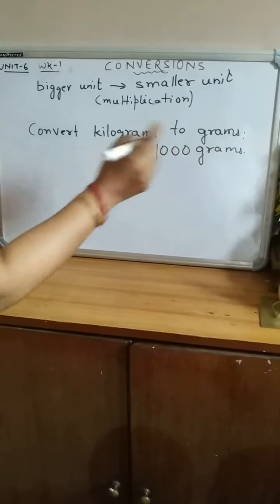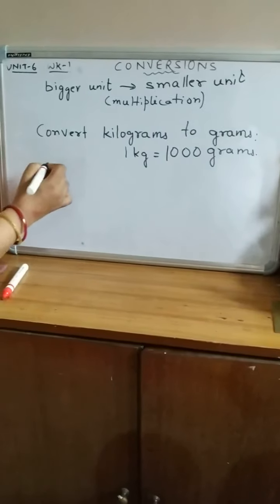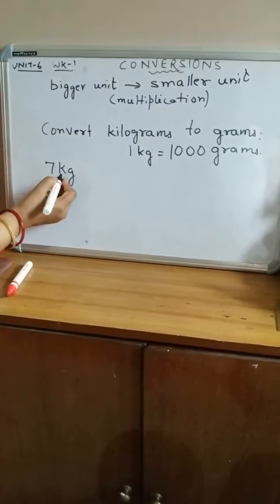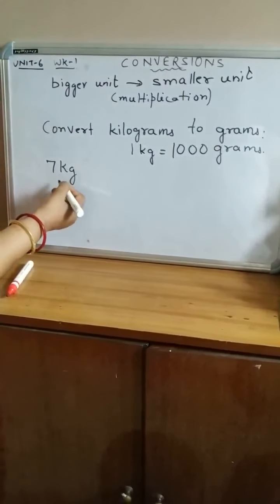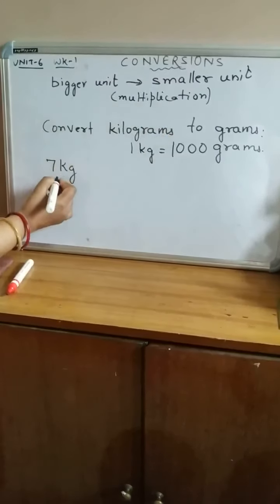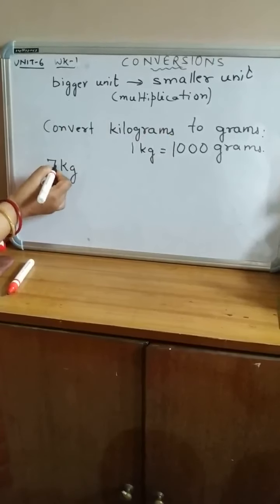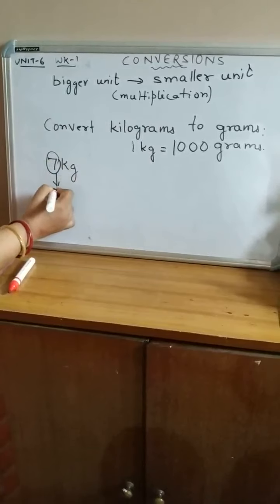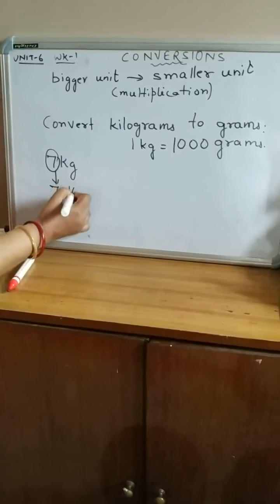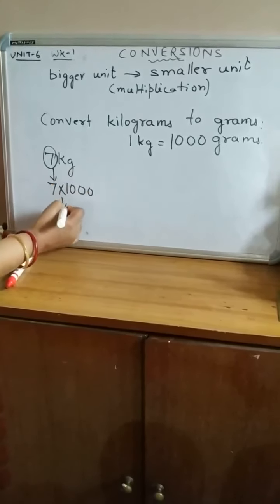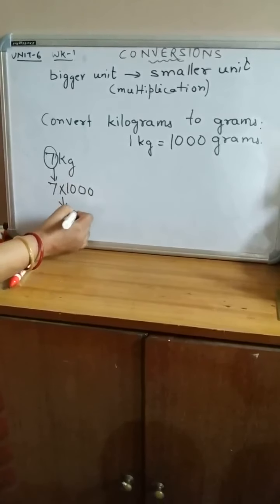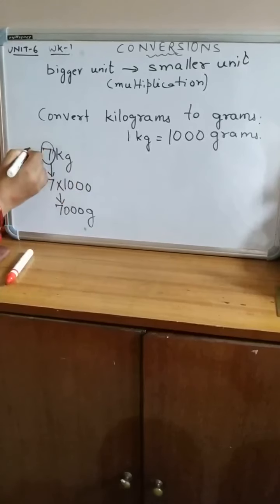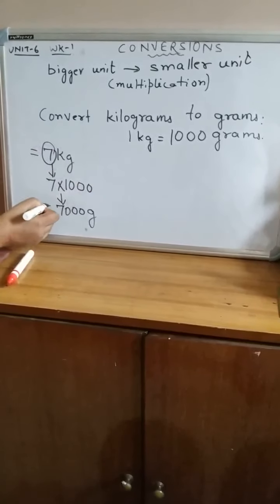Let us take an example. For example, 7 kilograms — how will you convert it into grams? The number of kilograms is 7. It will be multiplied by 1000, and then we get 7000 grams. So in this way, 7 kilograms is converted into grams.